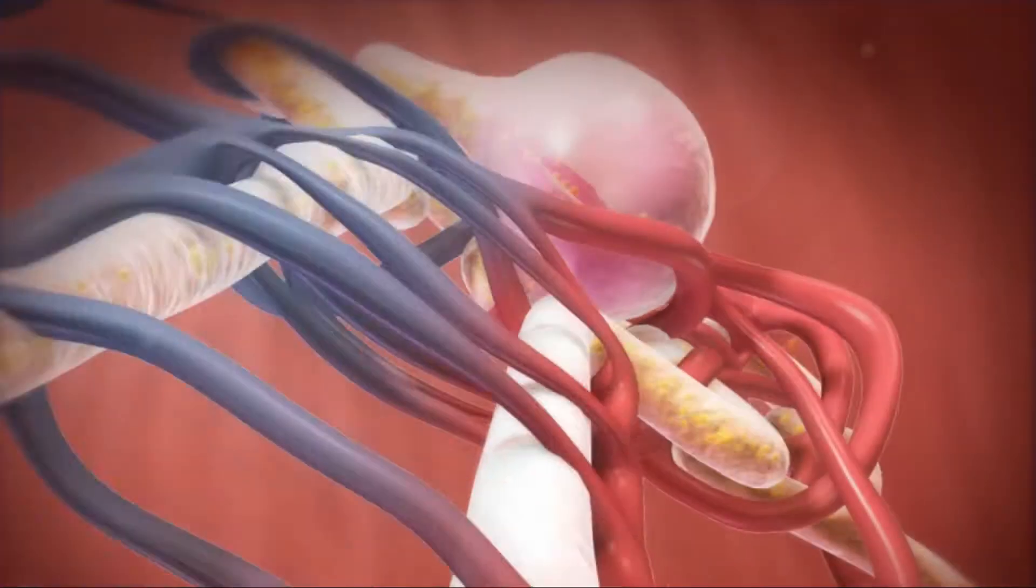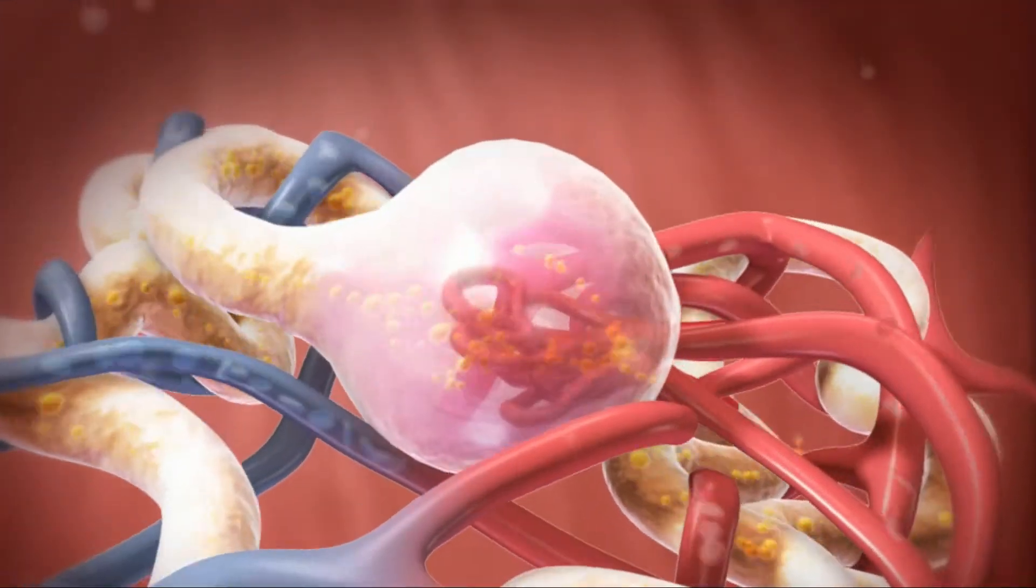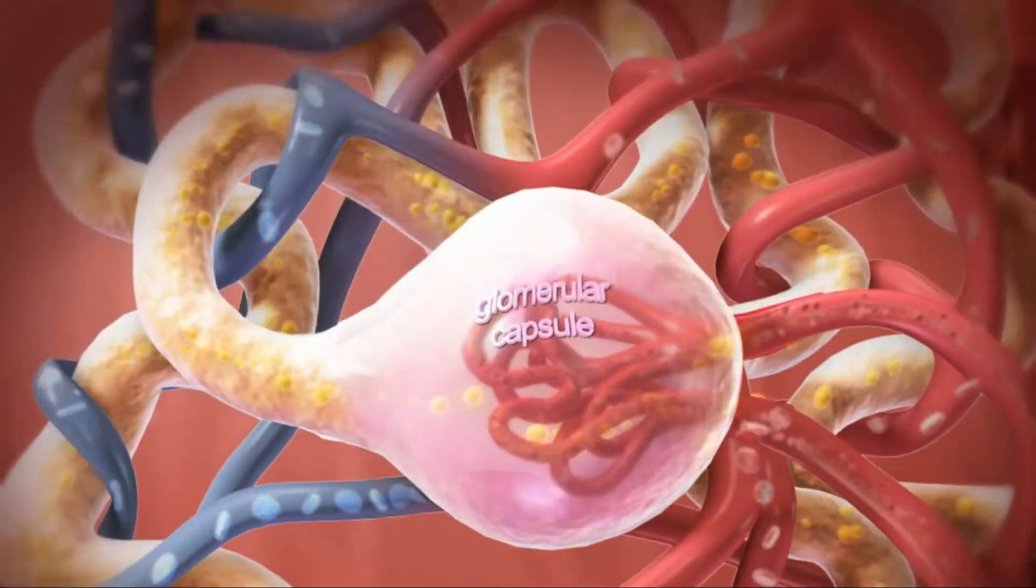Glomerular filtration produces a plasma-like filtrate containing waste, but also water and other substances the body needs.